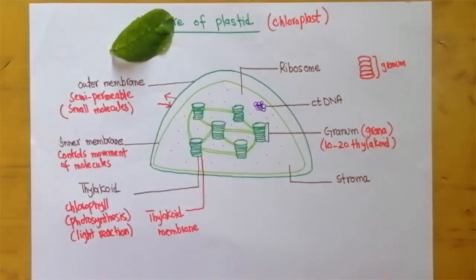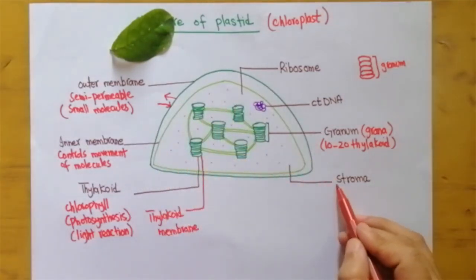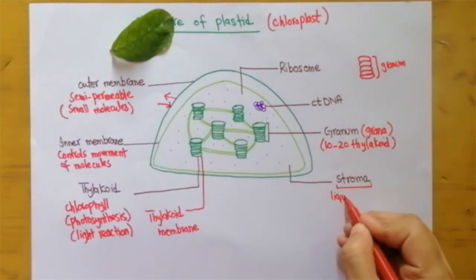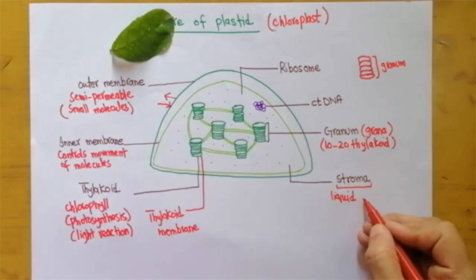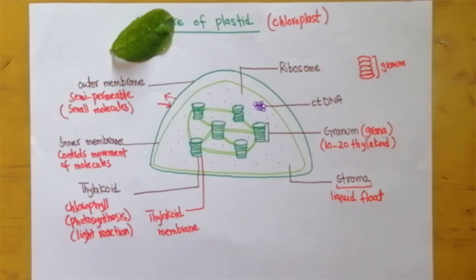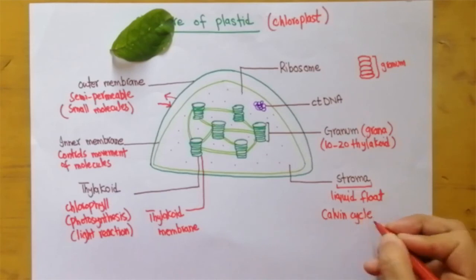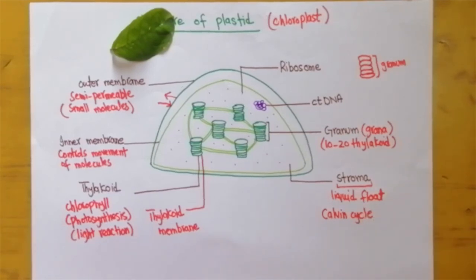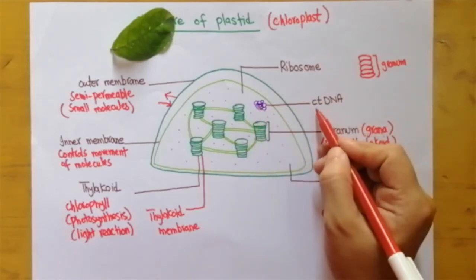All these structures — granum, thylakoids, and others — float inside a liquid material known as stroma. The stroma is the site where the second step of photosynthesis, the Calvin cycle, takes place. We will cover this in future lessons. An amazing feature of the chloroplast is that it contains its own DNA, known as chloroplast DNA (ctDNA).